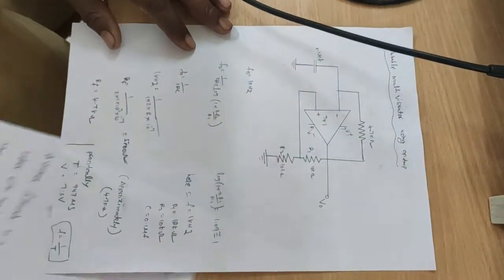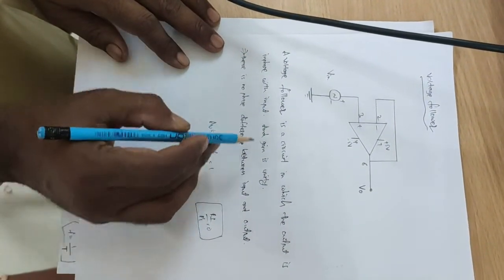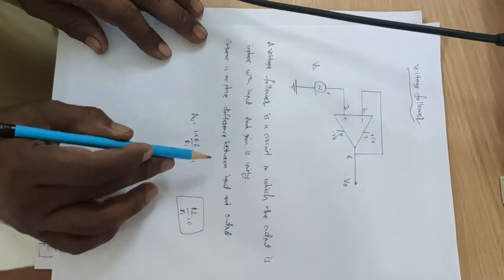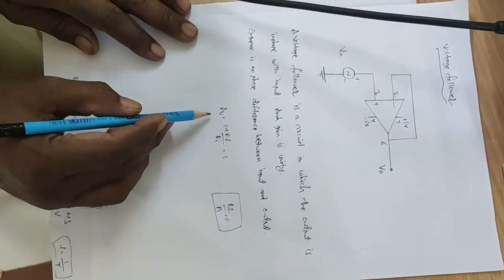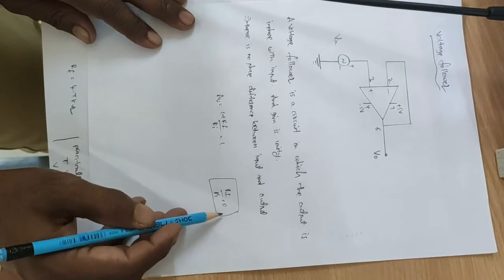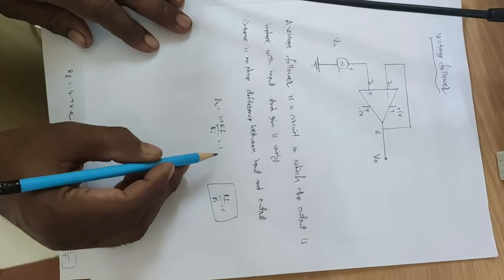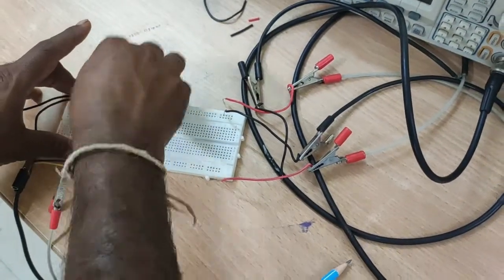Next, the Voltage Follower circuit. In this circuit, the output is in phase with the input and the gain is unity — there is no phase difference between input and output. The gain equals 1 plus Rf by Rs; since Rf by R is equal to 0, the voltage gain equals 1, that is unity gain.